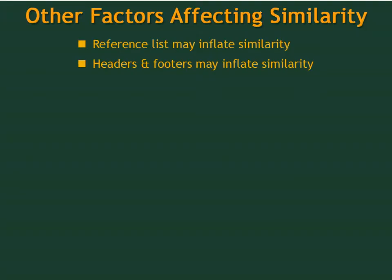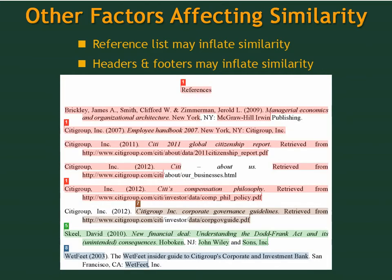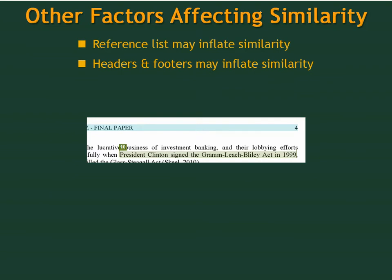There are other factors to keep in mind when evaluating a similarity score report. The similarity score may be inflated due to the reference list or bibliography in the paper. Other authors may have used the same sources as your student, which would be matched within the Turnitin database, thereby inflating the similarity score. Another common but benign match occurs in running headers and footers, whenever a student has included the title of their work on every page — a harmless match. Remember, Turnitin is a text-matching service, not really a plagiarism detection service. It is up to the instructor to interpret the matches in a similarity report and then make appropriate judgments.